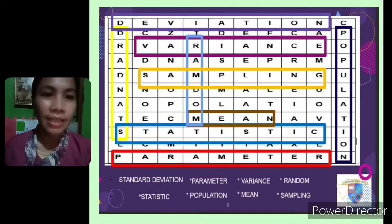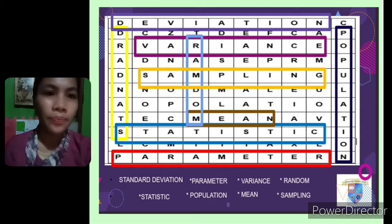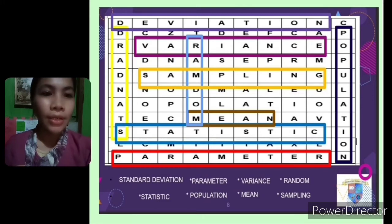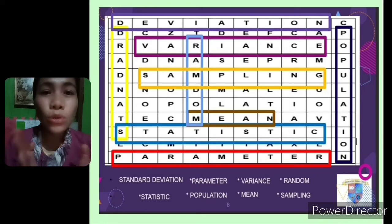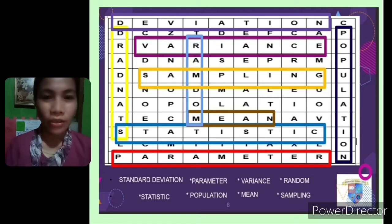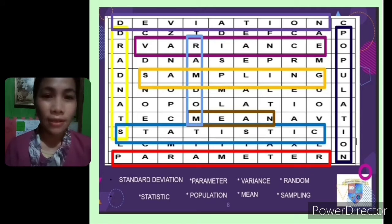Here are the words: standard deviation, variance, random, sampling, mean, statistic, parameter, and population. We also included the mean. These words are relevant to our discussion because we are talking about the mean and variance of sampling distribution and standard deviation.